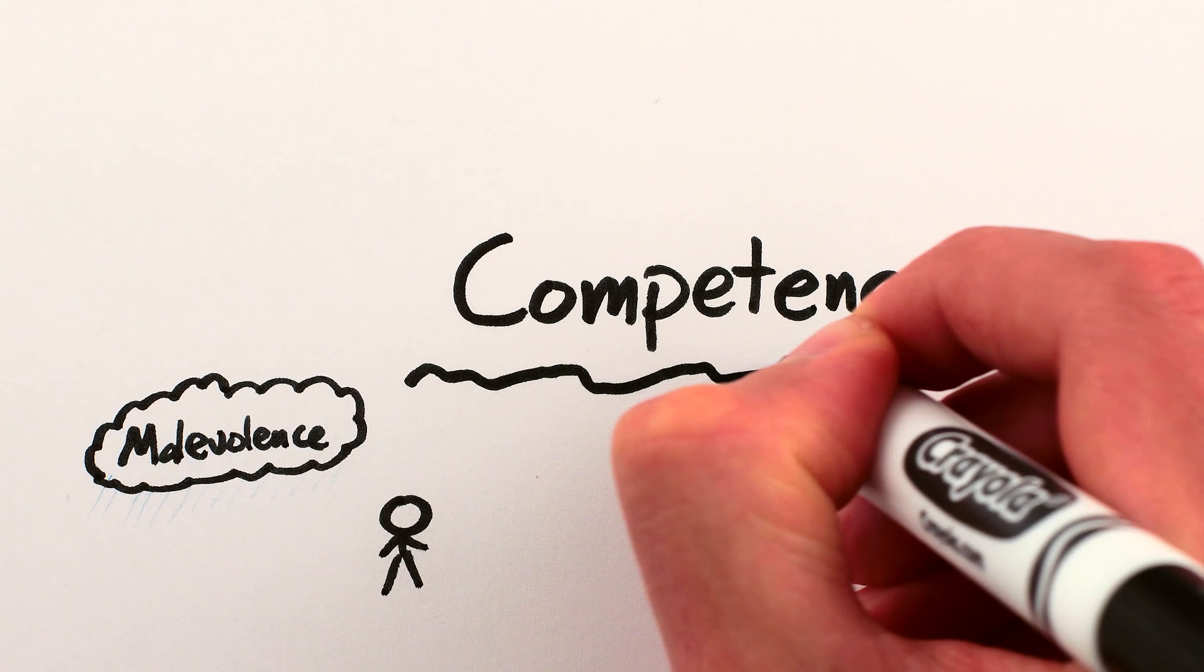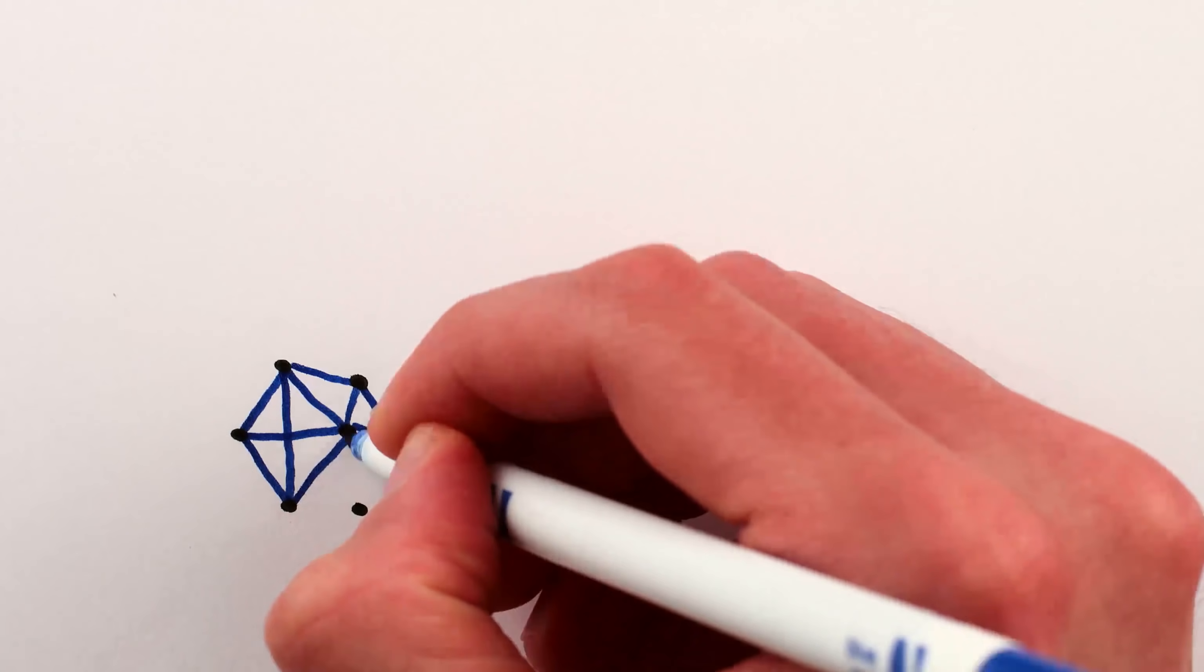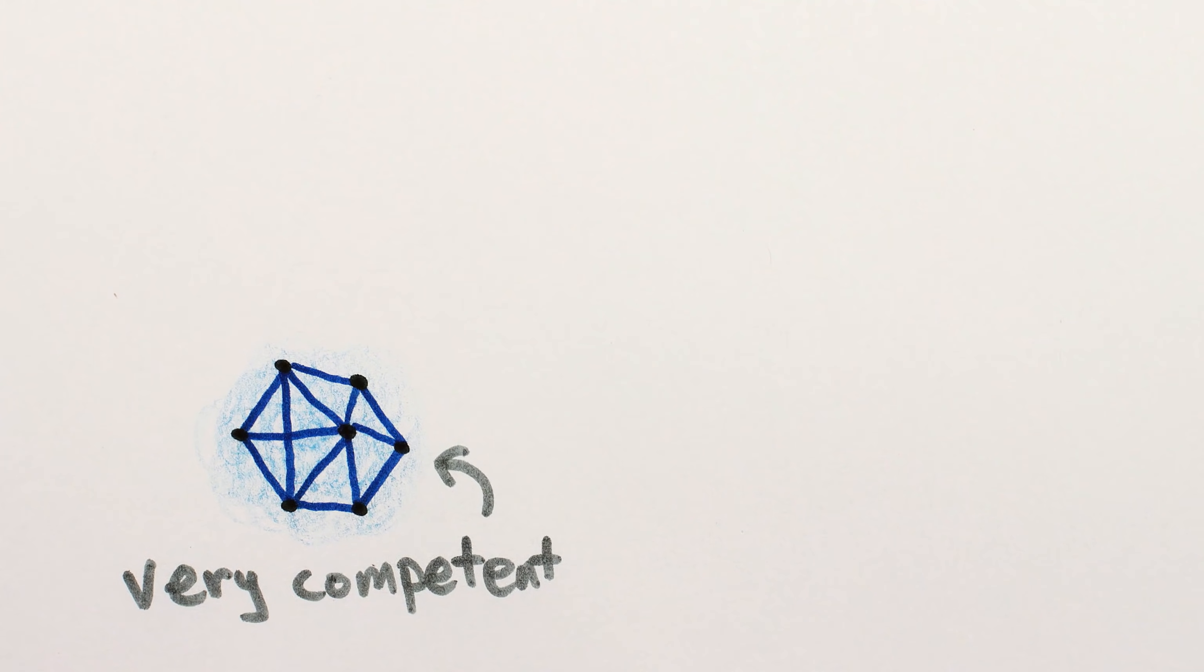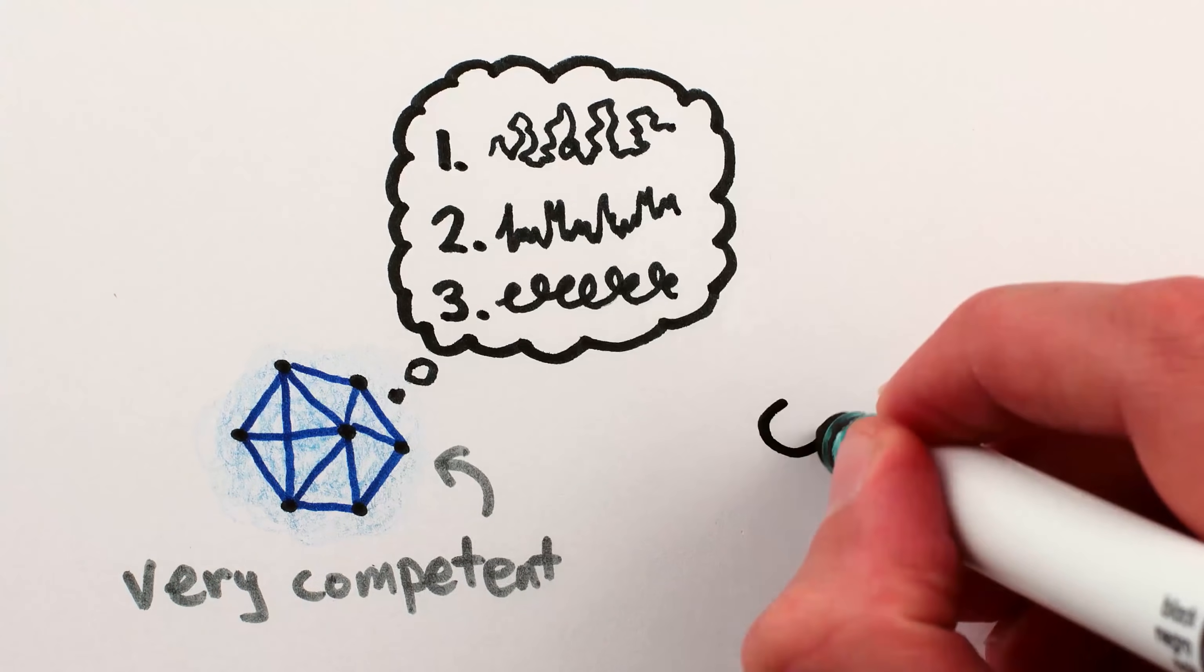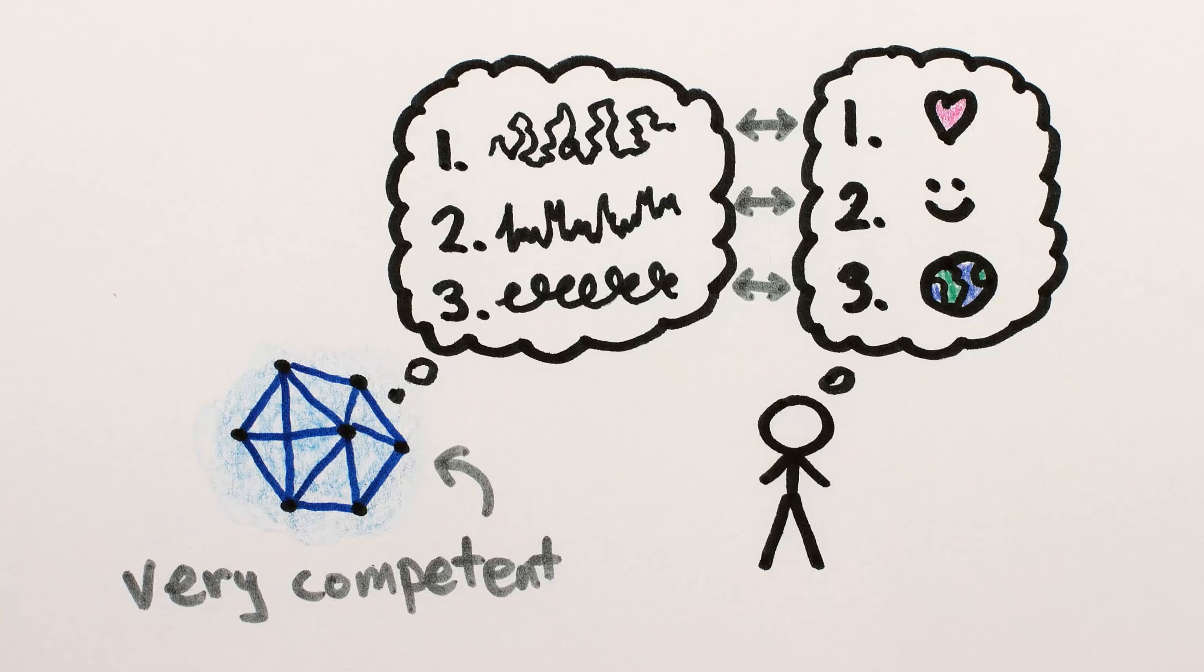The real worry isn't malevolence, but competence. Super-intelligent AI is by definition very good at attaining its goals, so the most important thing for us to do is to ensure that its goals are aligned with ours.